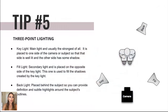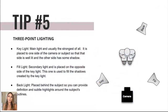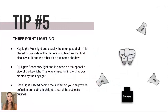Tip number five: three-point lighting. Three-point lighting is extremely important — it's a very simple but very effective method for lighting your space. It's composed of three lights: the key light, the fill light, and the backlight.